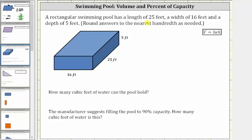A rectangular swimming pool has a length of 25 feet, a width of 16 feet, and a depth of 5 feet. We are asked two questions. First, how many cubic feet of water can the pool hold? And then for the second part, the manufacturer suggests filling the pool to 90% capacity. How many cubic feet of water is this? We're told to round to the hundredths place value, or two decimal places if needed.